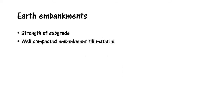For road earth embankments, the two most critical things required are the strength of the subgrade — we have to make sure the platform we're building on has good shear strength, resistance, and good load-carrying capacity. Once that is satisfied, the material used for filling has to be well compacted and both processes must be followed in accordance with the plan, profile, cross-section, and specifications.